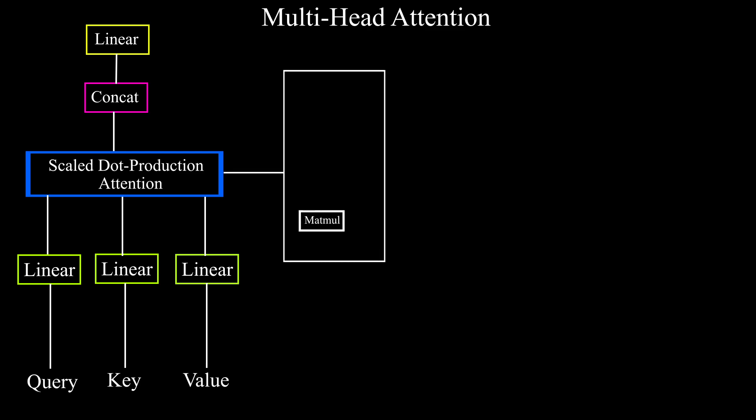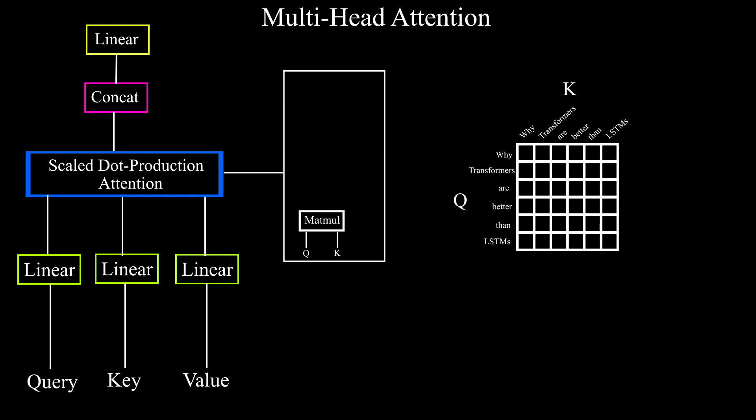First, it will take the dot product between query and key which will output a correlation matrix where the values of each row in each column represents how much that word in the row is related to the word in the column. And this matrix is also called the attention filter.